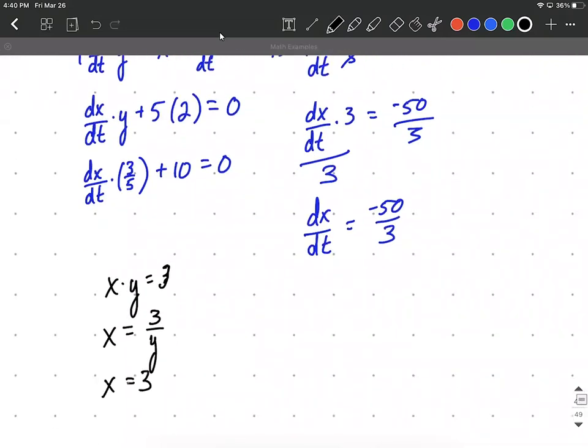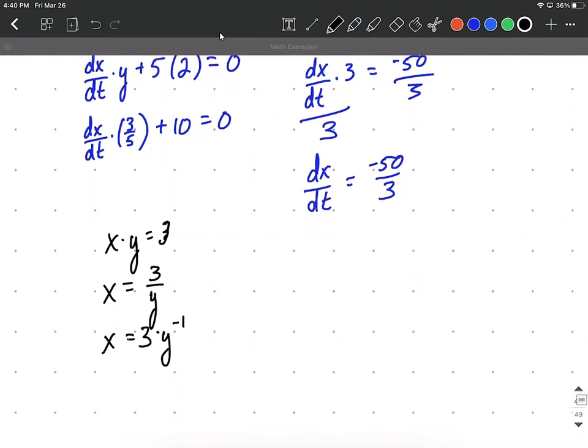So x is going to be 3 times y to the negative first power, just using an exponent rule to move it up to the exponent. And then if we differentiate each side with respect to t, we get dx/dt.